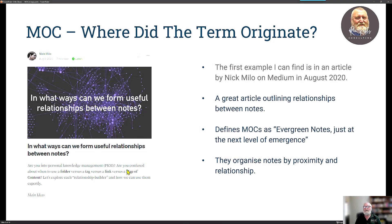Where did the term originate? The earliest example I can find was in an article by Nick Milo on the Medium platform in August 2020, so I can only assume Nick invented the term. It's a quite descriptive and useful term — 'maps of content' — for what these documents do. Nick defines maps of content as evergreen notes at the next level of emergence, up from your basic atomic or evergreen note, though they can also occupy several levels up.